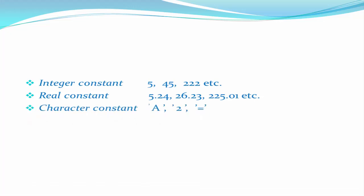A character constant is a single alphabet, a single digit, or a single special symbol enclosed within a single inverted comma — for example, 'A', '2', '=' — these are all character constants.